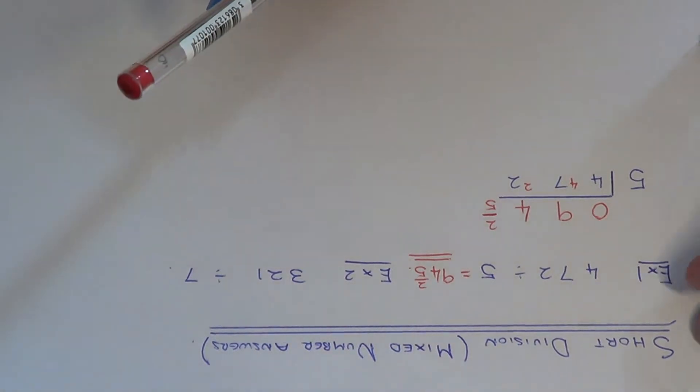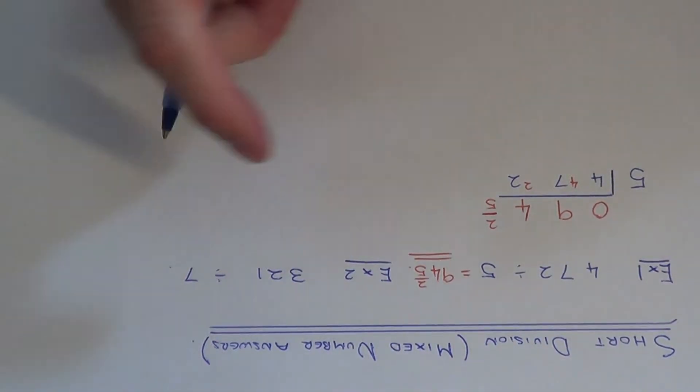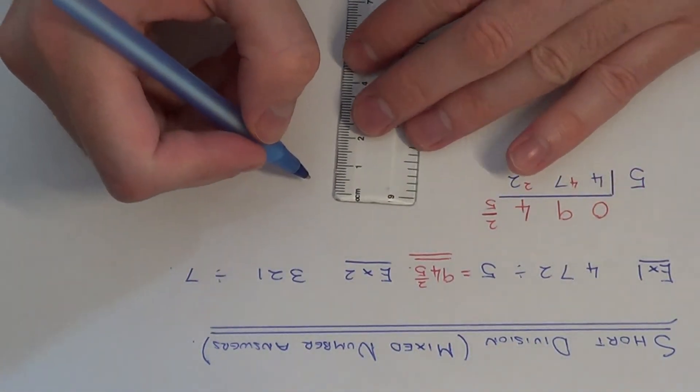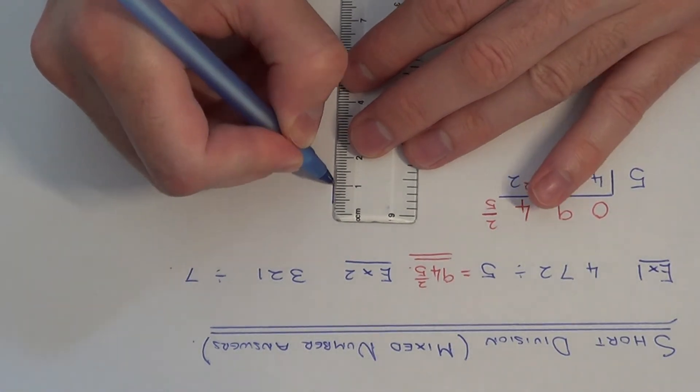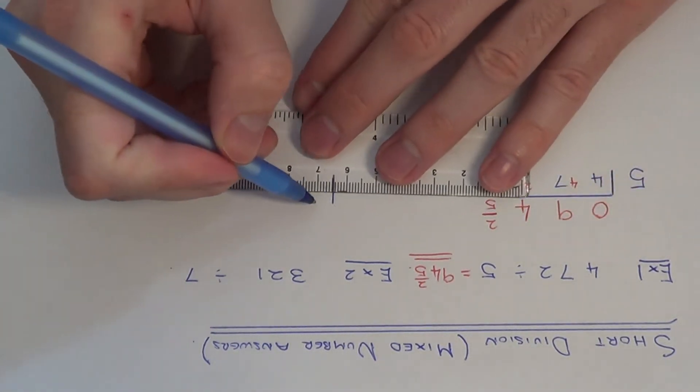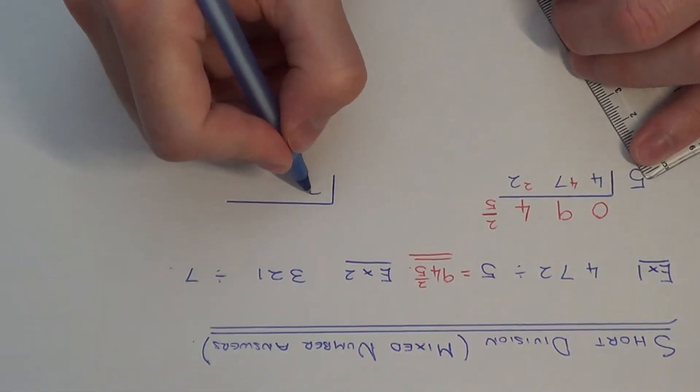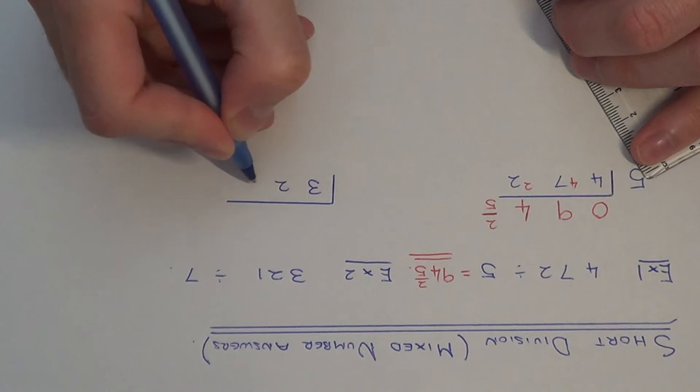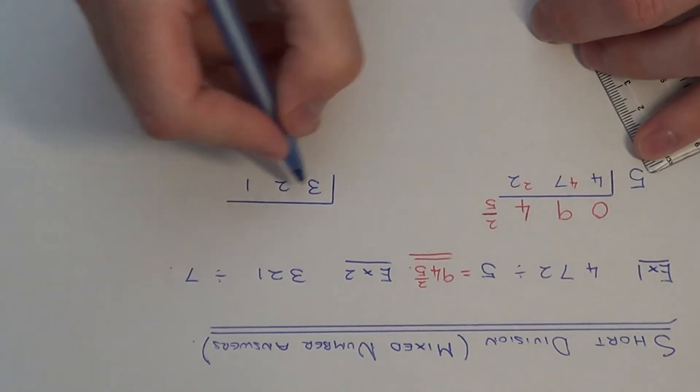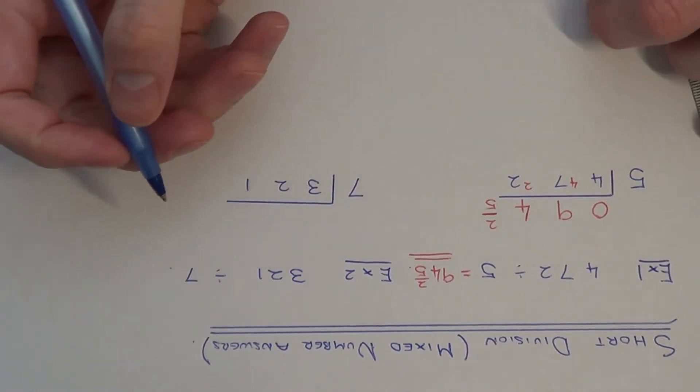Let's do example 2. This time we have 321 divided by 7. So again, set the division out in the same way. We put the number that we're dividing underneath the horizontal line and the number that we're dividing by at the start.